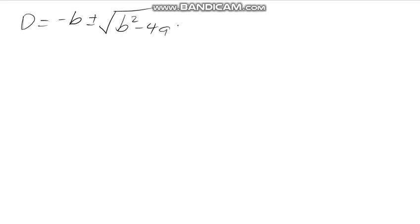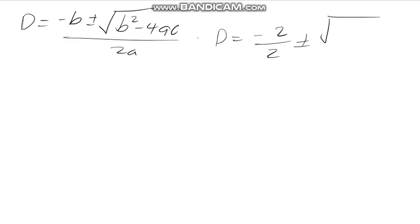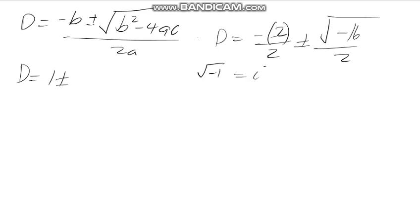So you're going to have to use the quadratic equation: D equals minus B plus or minus the square root of B squared minus 4AC, divided by 2A. When you substitute everything you get minus 16 over 2, which is the same as minus 1. The minus goes away because of the minus 2 into minus 2, so you get plus 1, plus or minus. A negative square root of 1 equals i, and we've got minus 16 which equals the square root of 16 times i, therefore 4i over 2.